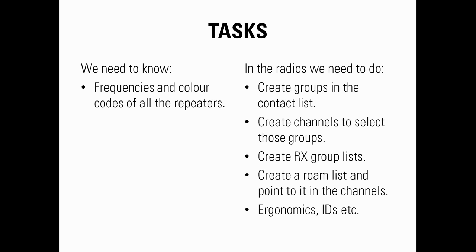Basically, when you select channel one it will use a particular roam list. When you select channel two it may use another roam list. It depends on how you want to configure the radio. Once you've done that, we can look at some of the ergonomics — things like the radio IDs and getting all of that sorted.